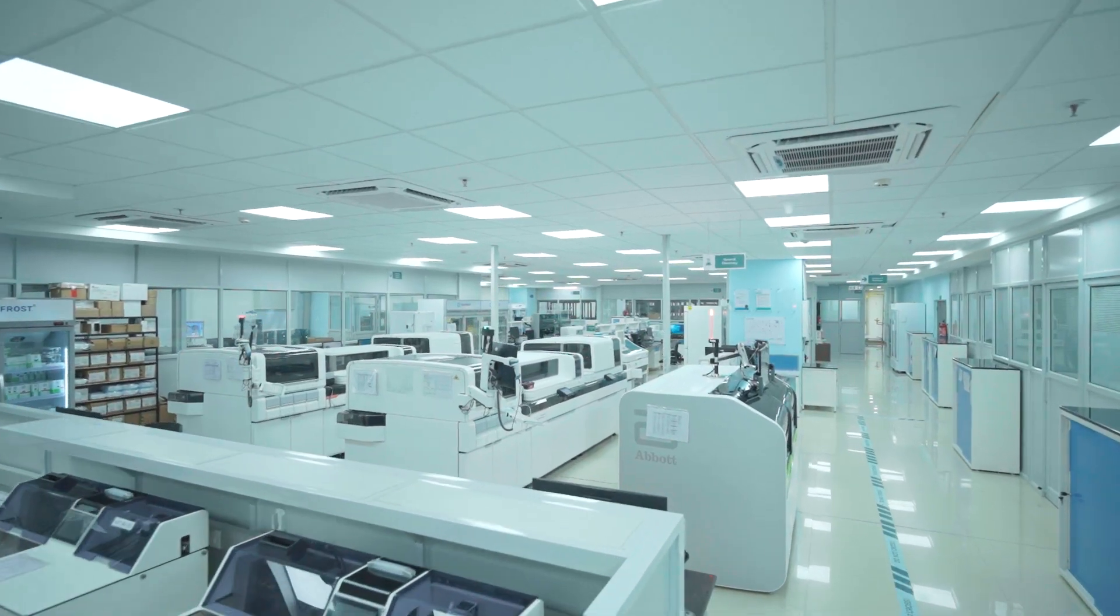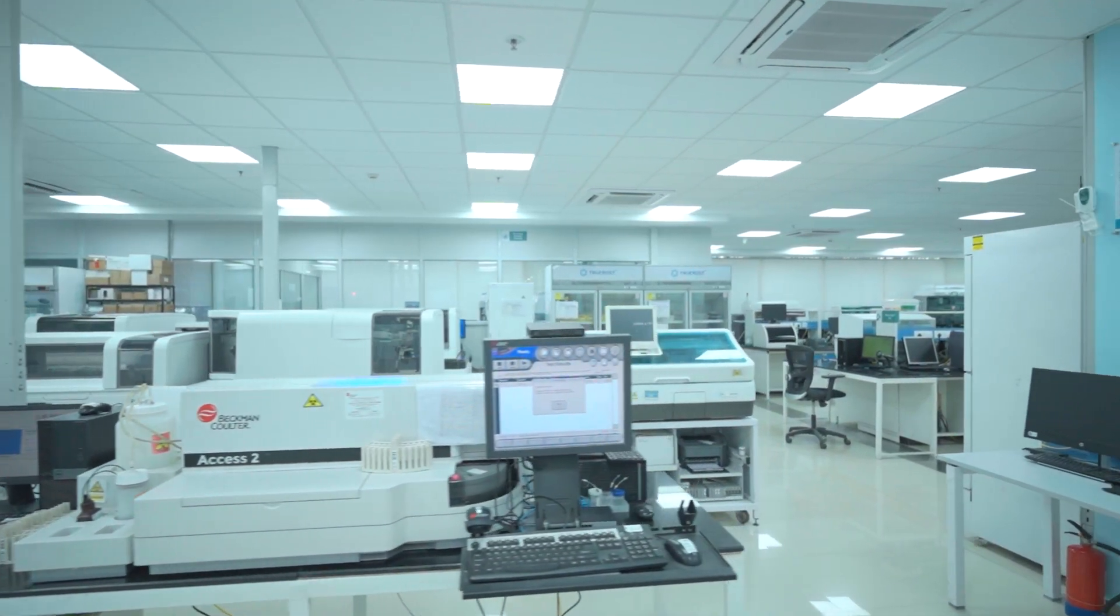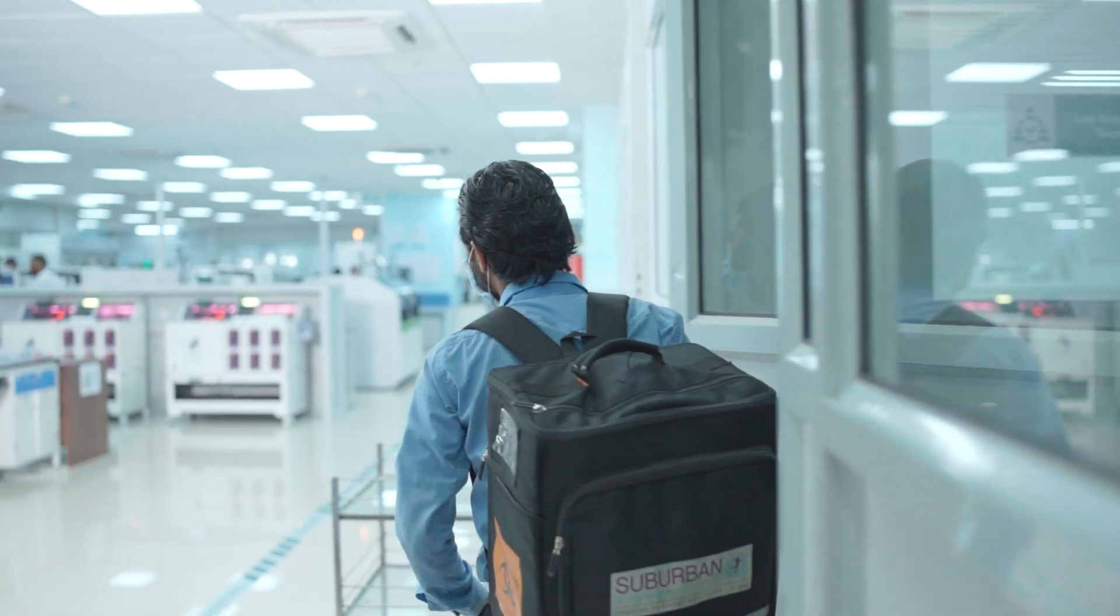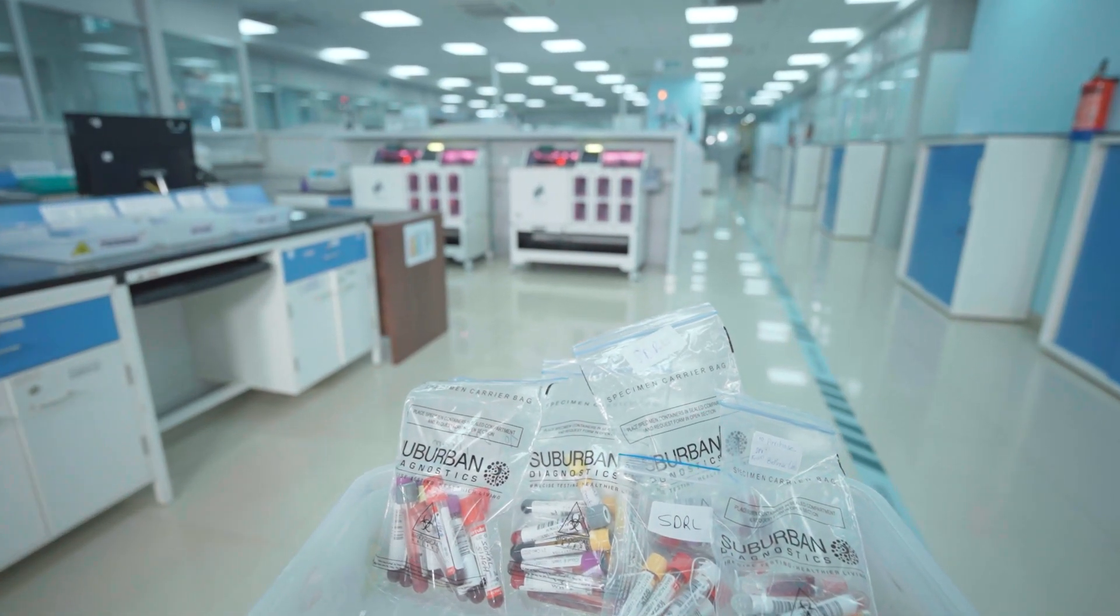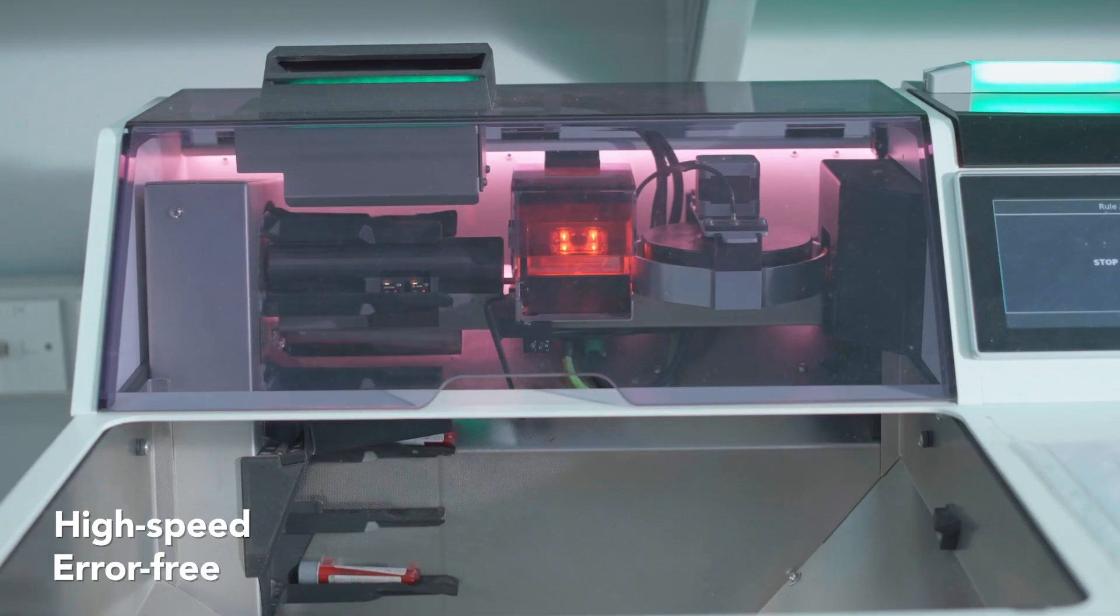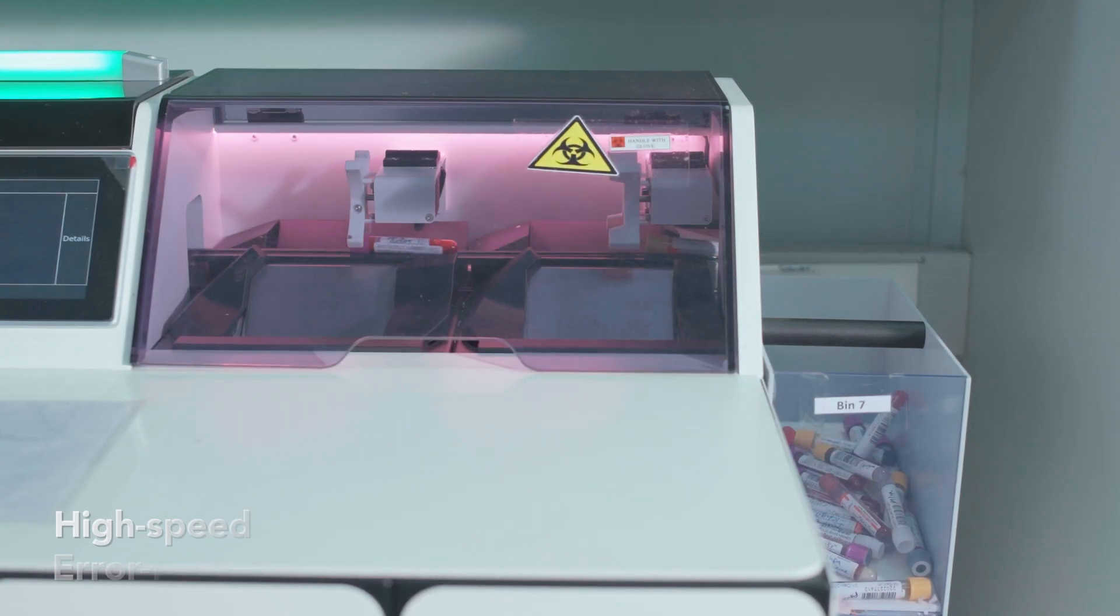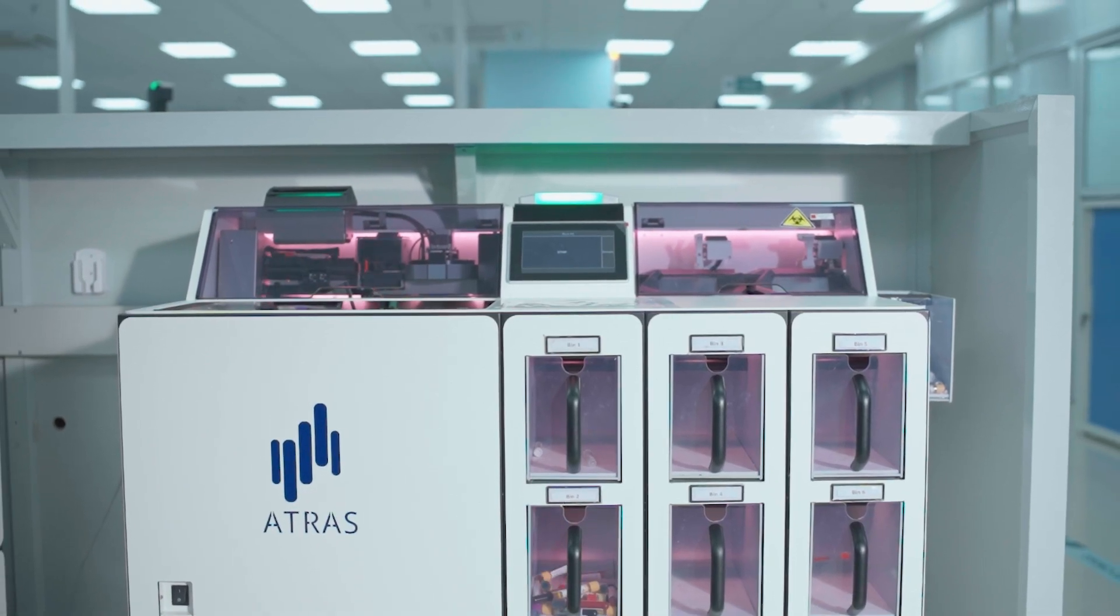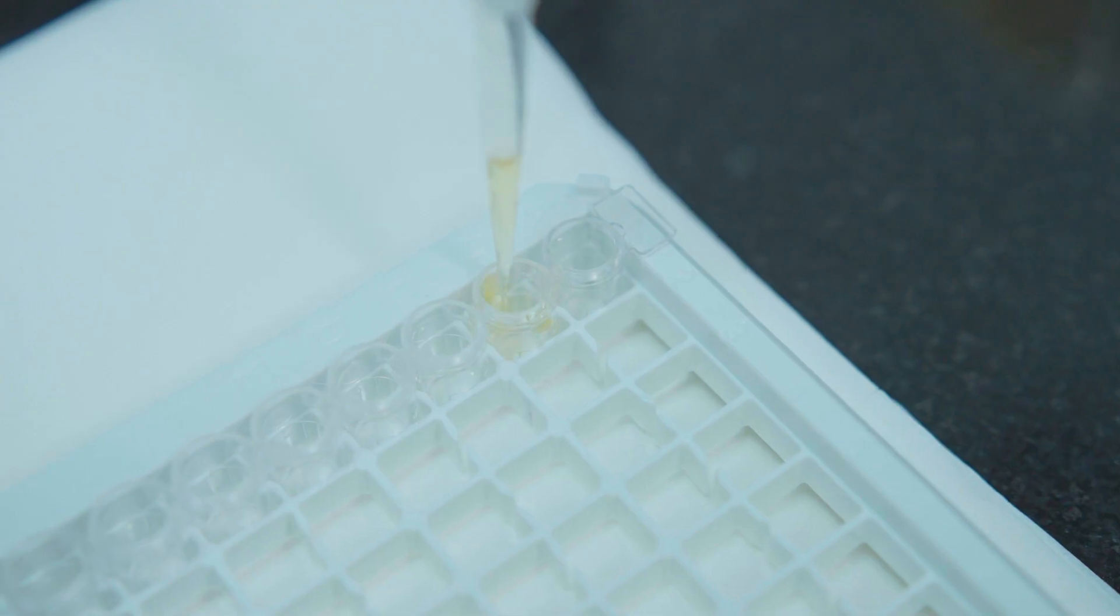All samples at SDRL go through numerous automated quality checks. We are now equipped with automated tube sorters that ensure high-speed, error-free, barcode-based, department and test-wise sorting of blood tubes. Let's take a closer look into SDRL's testing capabilities.